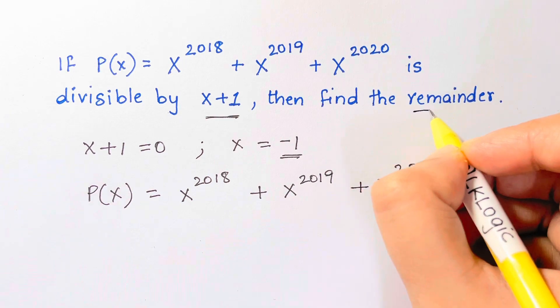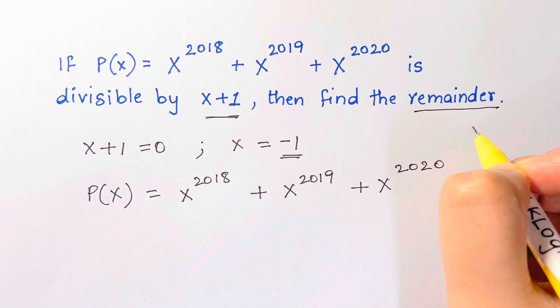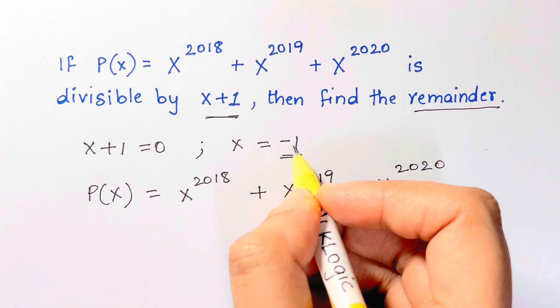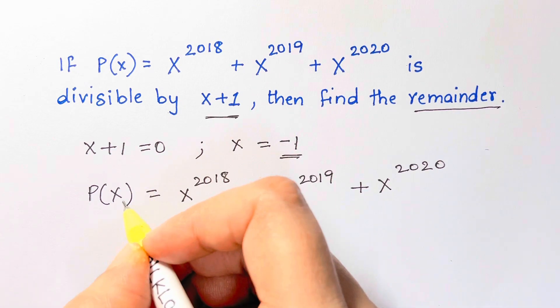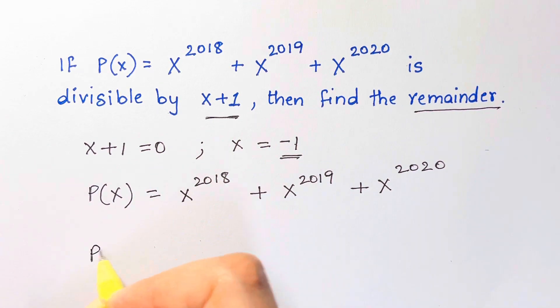Whenever they are asking you for a remainder, we use remainder theorem. Remainder theorem is just you need to insert the value of x in place of x. So P of x is equal to negative 1, just put it back.